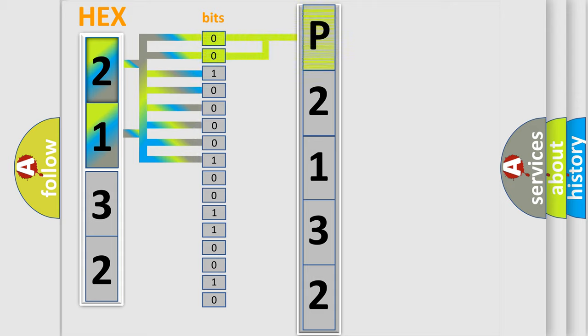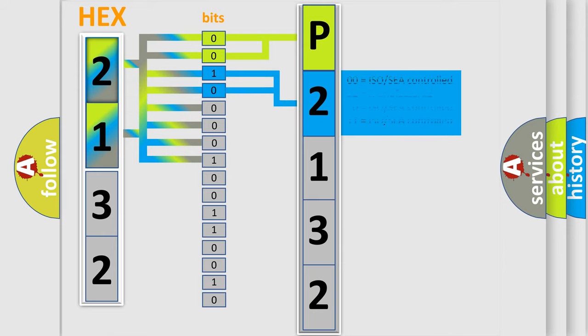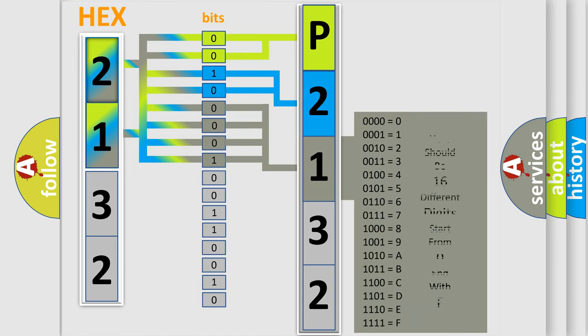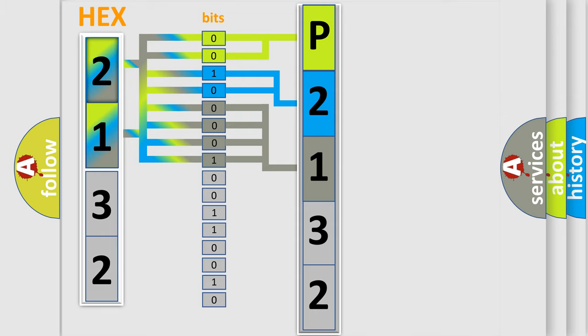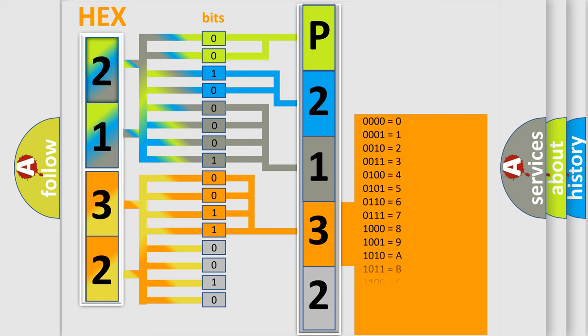By combining the first two bits, the first character of the error code is expressed. The next two bits determine the second character. The last four bits of the first byte define the third character of the code. The second byte is composed of eight bits. The first four bits determine the fourth character, and the last four bits define the fifth character.